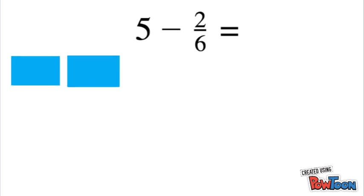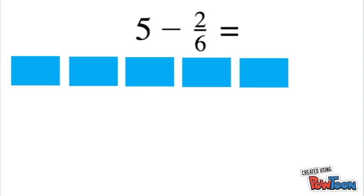All right, let's look at one more example. Here we have 6 minus 2/5. So we'll start by representing our five wholes. And again, since our denominator is six, we're going to turn one of our wholes into 6/6 so that we have some to take away from.